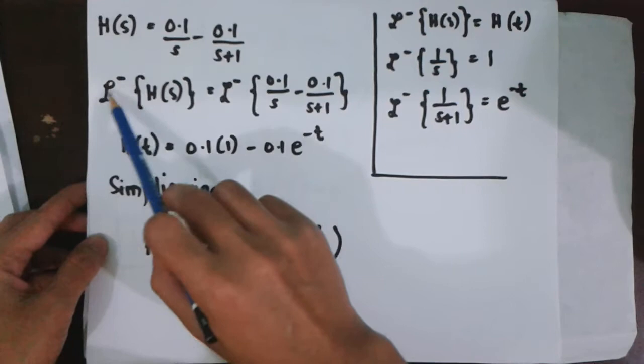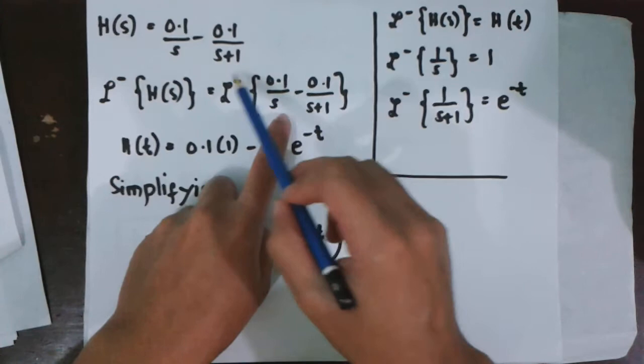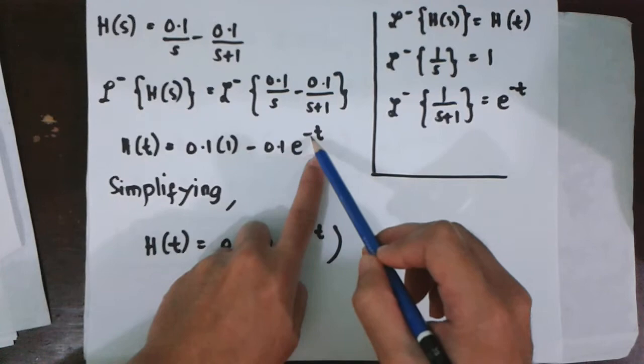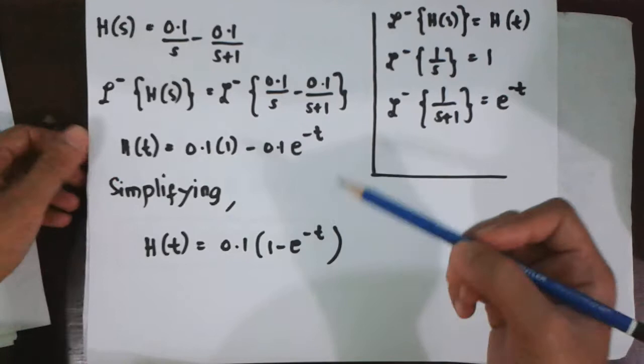H(t) is equal to 0.1 times (1 minus E to the negative t). The Laplace inverse of H(s) is H(t). The Laplace inverse of 0.1 over s, 0.1 is constant, so you can separate it. 1 over s is equal to 1 minus the Laplace inverse of 0.1 over (s plus 1), which is 0.1 times E to the negative t. Simplifying, we can get this equation.